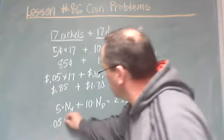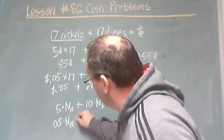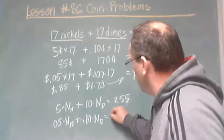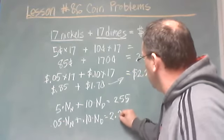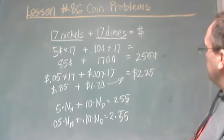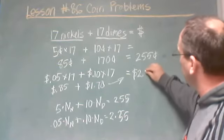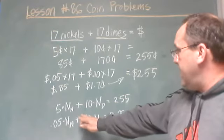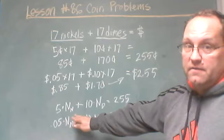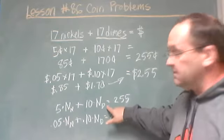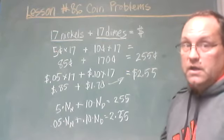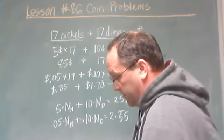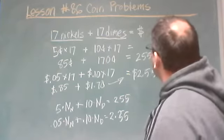Or, we have the option of expressing the equation in terms of dollars: 0.05 times the number of nickels plus 0.10 times the number of dimes equals 2.55. Use whichever form makes the most sense to you. Let's go ahead and do two of your homework problems — practice A and B in the book.